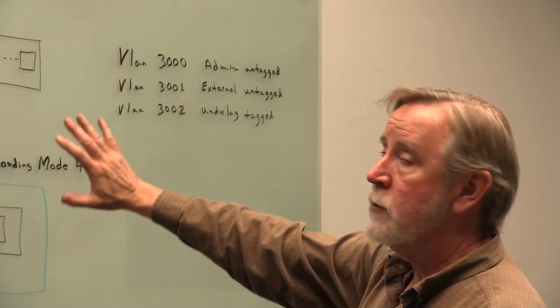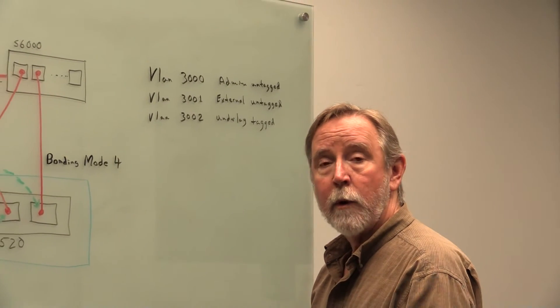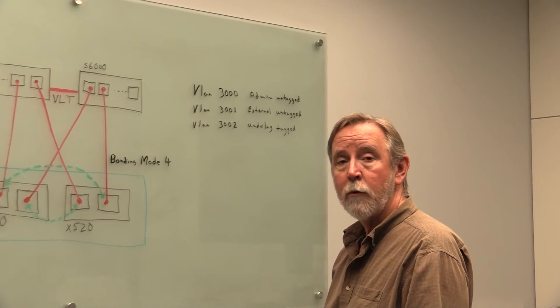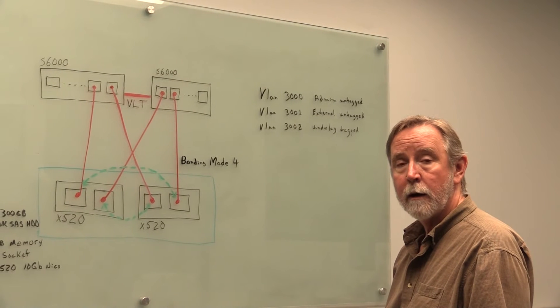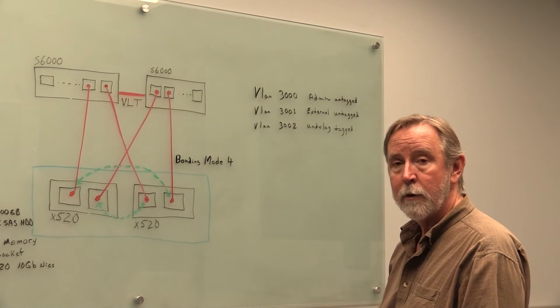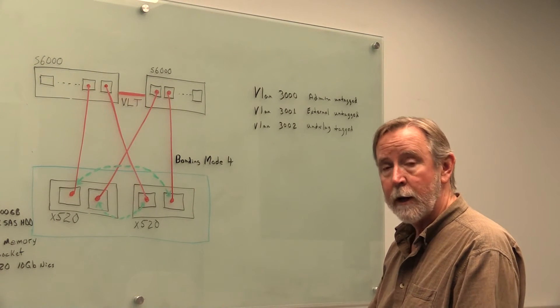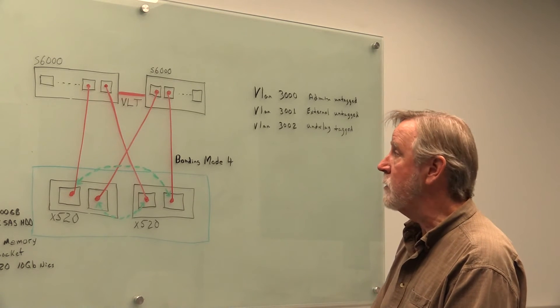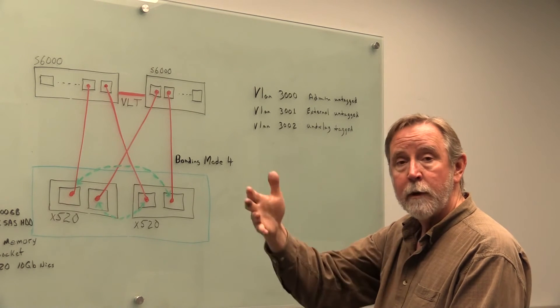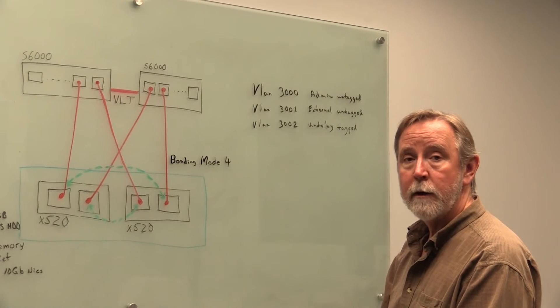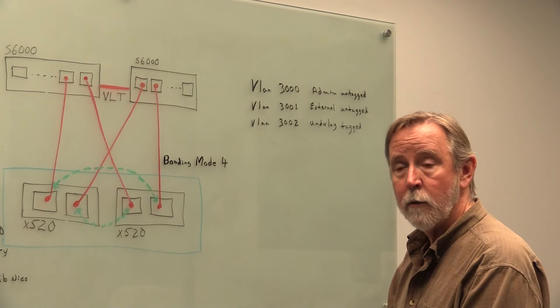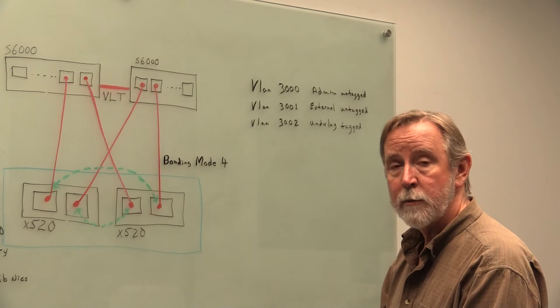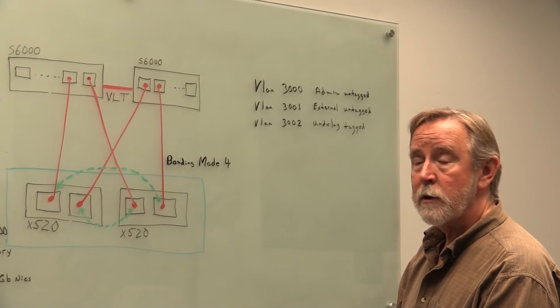So once we had that all set up and configured, we installed Linux on both the head node and the compute node initially, just to check out the networking and make sure we had external internet access. Then we boot from the USB key that we created, we boot the head node, what will be the head node, from the USB key, and start the installation process.